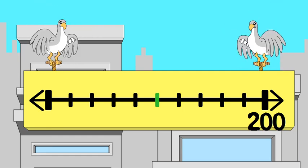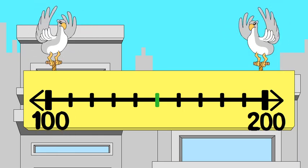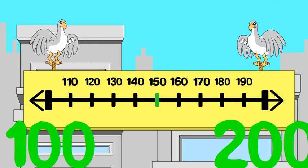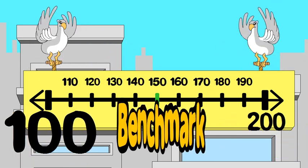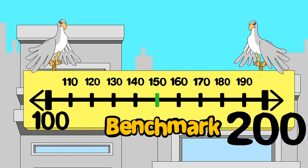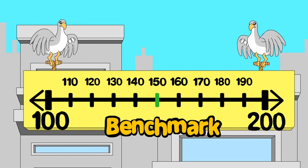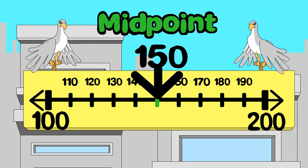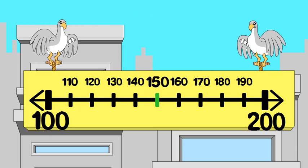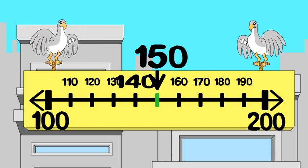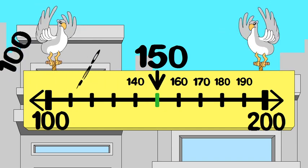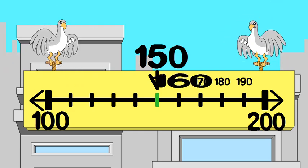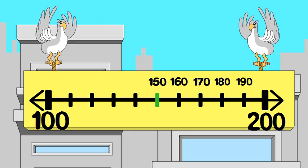Numbers to the right have a greater value than numbers to the left. The nearest hundred on either side of our number is a useful benchmark, and the midpoint is the number halfway between two benchmarks. If the number you want to round is less than the midpoint, round down. If it is at or greater than the midpoint, round up.